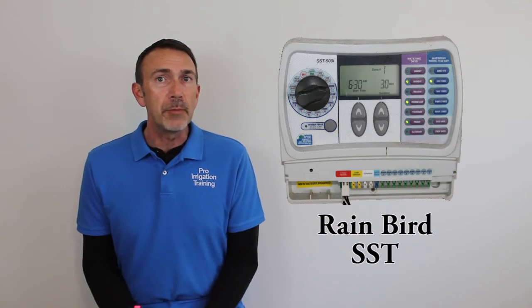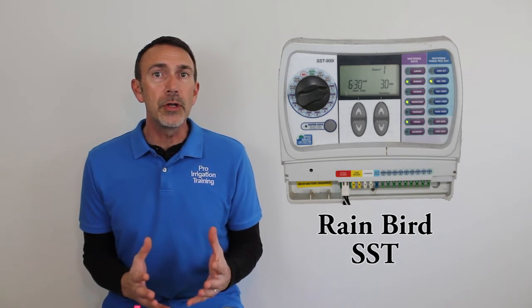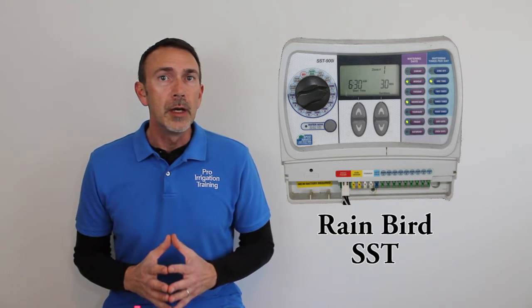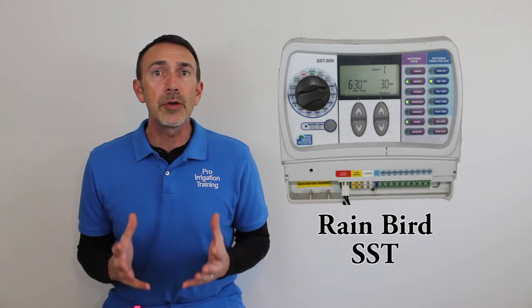But the problem is that with the start times, a lot of people will think that you need an individual start time for each individual zone. Now there's only one major timer that I know of in the market, and that's a Rainbird timer that was probably produced just for this reason, but almost all the other timers that you're going to encounter basically are wanting you to set one start time to run each cycle as it goes through.